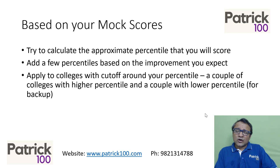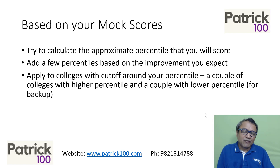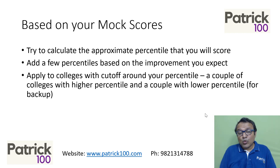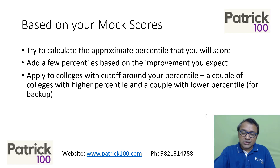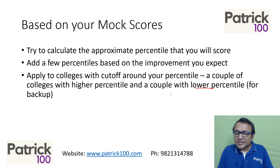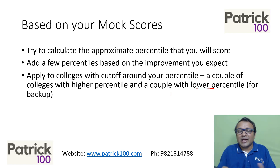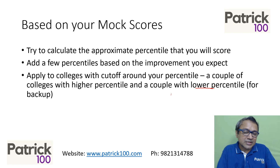Apply to colleges with cutoffs around your percentile. You can apply to a couple of colleges with a higher percentile cutoff and a couple with a lower percentile — as backup colleges — because what if you score really high? It should not happen that you scored high and haven't applied to those colleges. For lower percentile colleges, application forms are often open even after the CAT exam. Right now, focus on those colleges whose forms are available before the CAT exam, like SPJ, and are not available after.